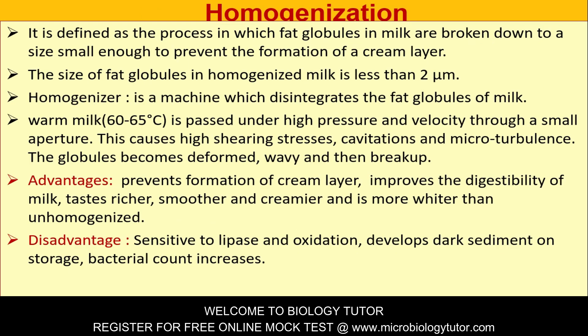Homogenization is defined as a process in which fat globules in milk are broken down to a size small enough to prevent the formation of a cream layer. The size of fat globules in homogenized milk is less than 2 micrometers. A homogenizer is a machine which disintegrates the fat globules of milk; warm milk at 60 to 65°C is passed under high pressure and velocity through a small aperture.